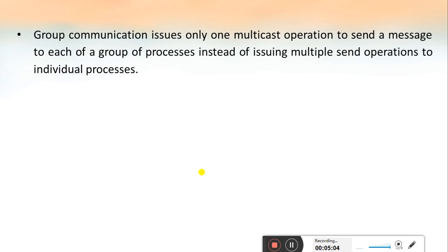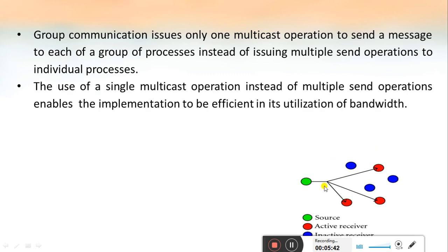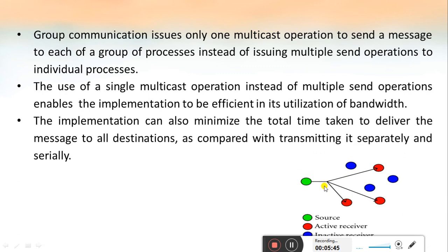Group communication uses a multicast operation to send a message, so it needs only a single multicast operation to send the message to many members of a particular group. It does not need to issue multiple send operations to individual processes. The sender can multicast the message to a group interface rather than sending directly to each node, achieving great bandwidth utilization and minimizing the total time taken to deliver messages to all destinations.